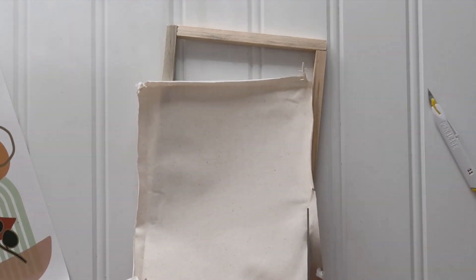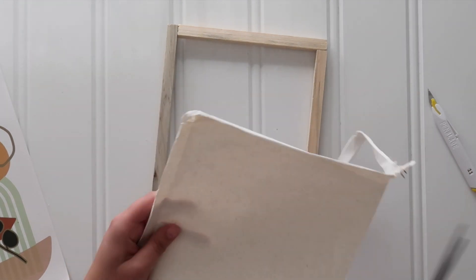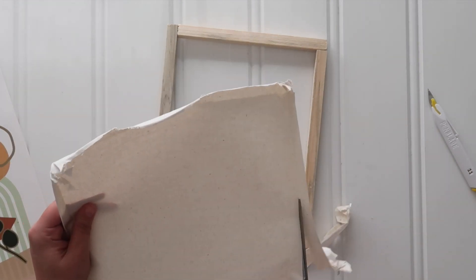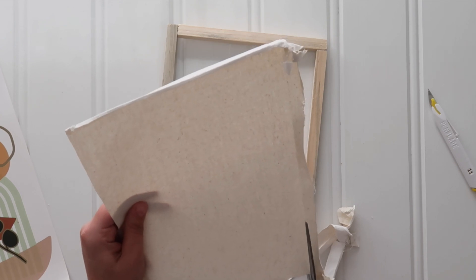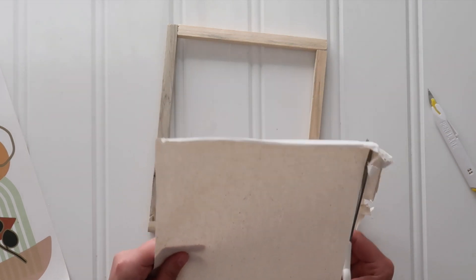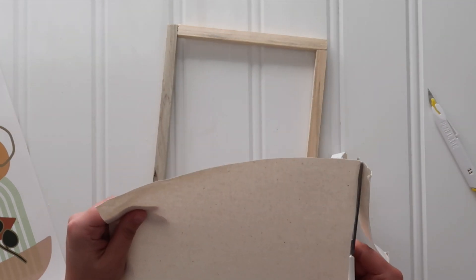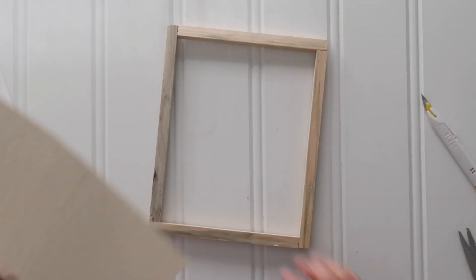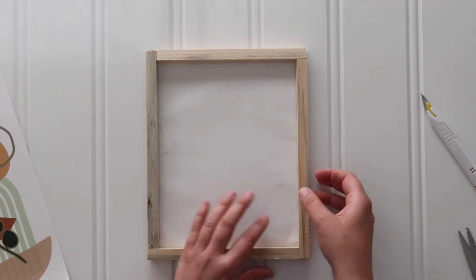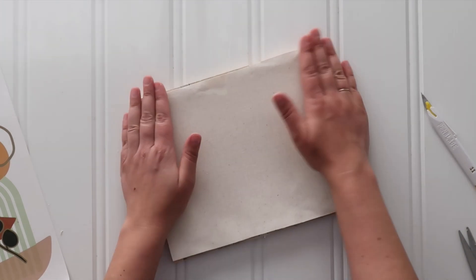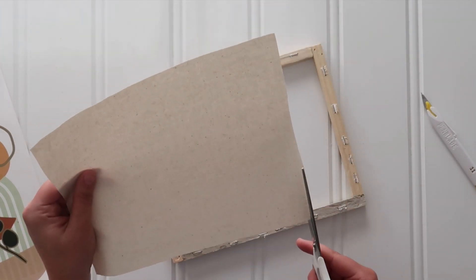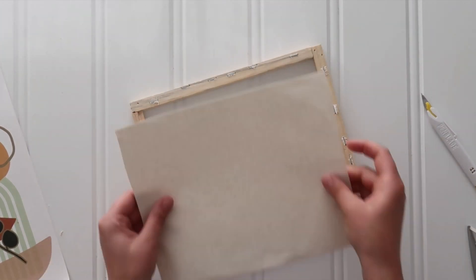From there, I took a pair of scissors and cut that canvas down to size. There's a little fold or ridge where the canvas was folded over that wooden frame, so just trim right on the inside of that line and make sure that the canvas fits right on the back of that wooden frame without any extra fabric poking over the edges.